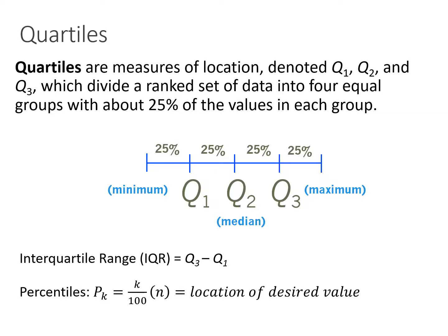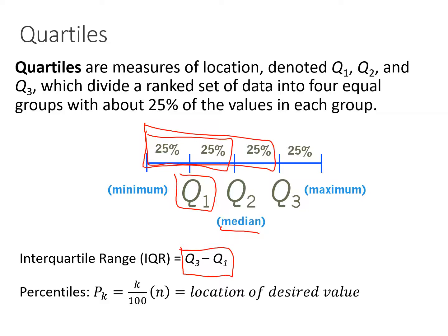Another important measure of relative standing is something called a quartile. Quartiles break the data up into quarters — 25% sections. Q1 is the first 25%, Q2 is at the 50% mark and is more familiar as the median, and Q3 is at 75%, with the last 25% to the right. The interquartile range, also known as the IQR, is Q3 minus Q1. We'll also use percentiles: we find the percentile of some value K using the equation K over 100 times N, which gives us the location of our desired value.